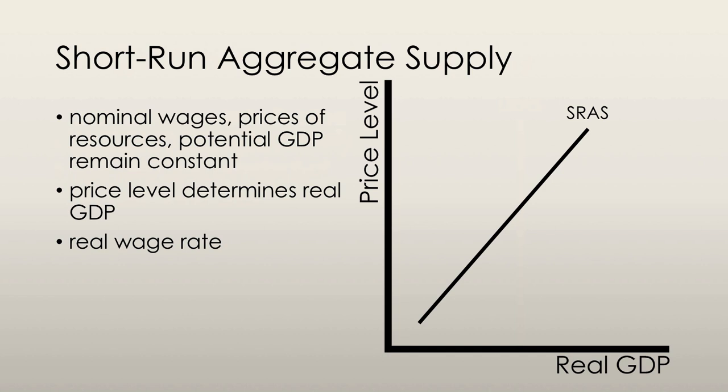Short-run aggregate supply, on the other hand, is the relationship between the quantity of real GDP supplied and the price level when the money wage rate, the price of other resources, and the potential GDP remain constant. In the short run, a rise in the price level does bring an increase in the quantity of real GDP supplied, and that's why short-run aggregate supply slopes upwards. The real wage rate is at equilibrium where short-run aggregate supply intersects long-run aggregate supply, as we can see on the graph.